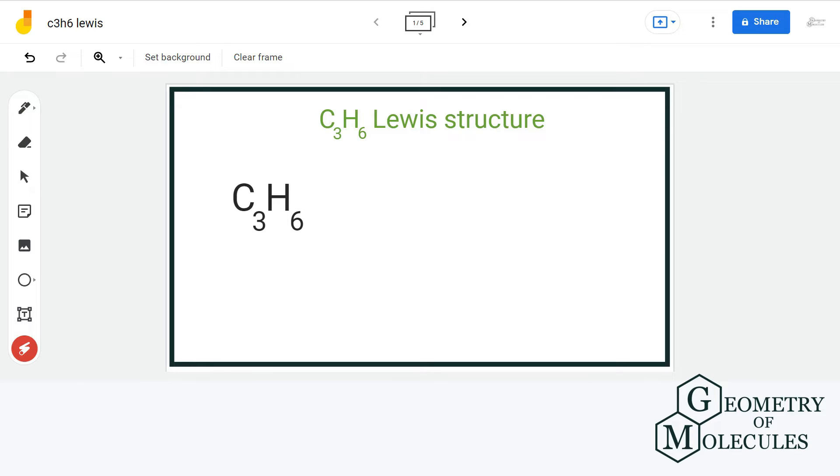In organic chemistry, there can be many possible compounds having same formula, same valence electrons but different structural arrangements. Such compounds are known as structural isomers, and there are a total of 2 isomers having formula C3H6. Let us discuss the Lewis structure of each one of them.